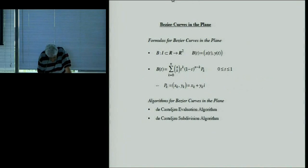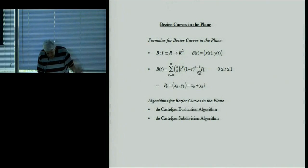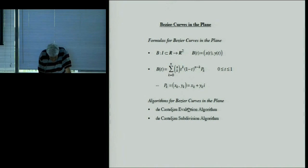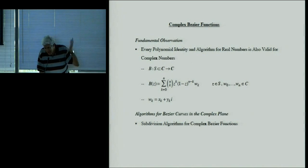Let's go back to Bézier curves. A Bézier curve is a function from some subset of the real numbers into the plane, with X and Y components both being polynomials. The control point P_k has an X and a Y component — a point in the plane I can represent as a complex number. Since polynomial identities true for real numbers are also true for complex numbers, I can extend Bézier curves to have a complex variable Z and complex control points W.